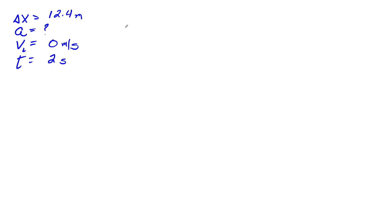So if we write the equation out. Delta x is equal to initial velocity times time plus 0.5 at squared. Okay.